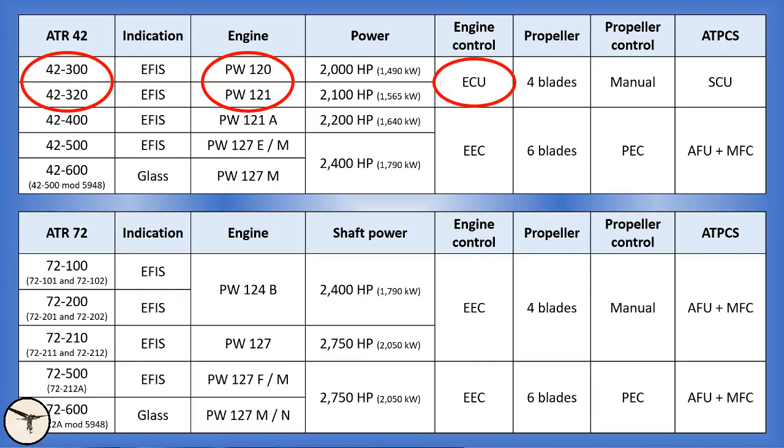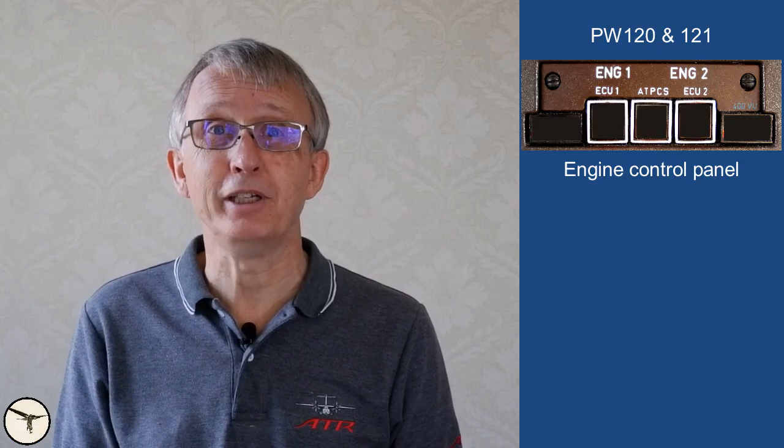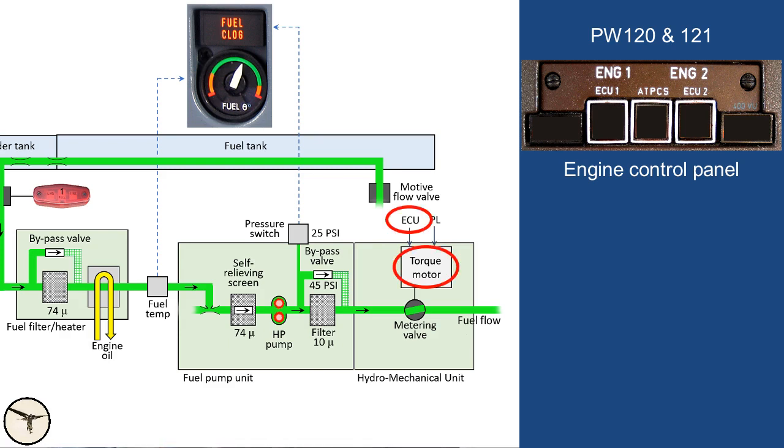The ATR 42-300 and 320 are equipped with PW120 and 121 engines respectively, fitted with the ECU (engine control unit). The ECU push button is on the engine control panel and is normally always in during operation. An amber fault light illuminates when the ECU has failed and when the engine is stopped, extinguishing when NH exceeds 25% during start. When operative, the ECU controls fuel flow via the torque motor in the HMU, monitors power lever position and atmospheric conditions, and ensures engine power remains constant as conditions change — for example during climb — without needing to adjust the power levers. However, engine torque may vary with airspeed due to ram air effect.